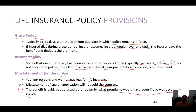A misstatement of age will not void the contract. The benefit is paid, but adjusted up or down by what the premium would have been if the age was accurately stated. If you paid less premium due to a wrong age, they can't say the contract is invalid — instead they'll adjust the face amount accordingly based on what you actually paid.